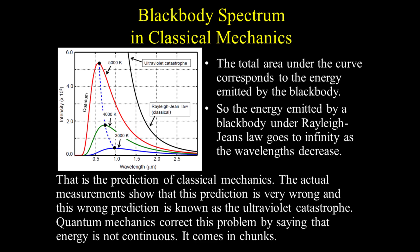Quantum mechanics corrects this problem by saying that energy is not continuous — it comes in chunks. At long wavelengths, these chunks are very small and close together, so we can describe the energy of radiation at these wavelengths as continuous. That is the case for both infrared and visible radiation. Continuum mechanics is a good approximation in these cases. When we get to x-rays and gamma rays, the energy chunks are wide apart and continuum mechanics is no longer valid.